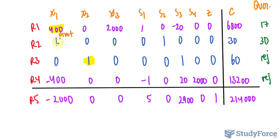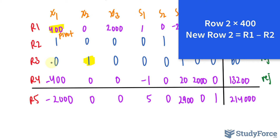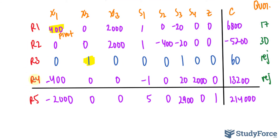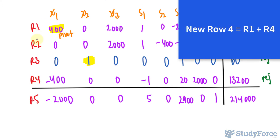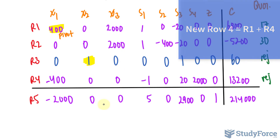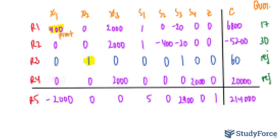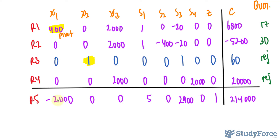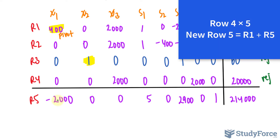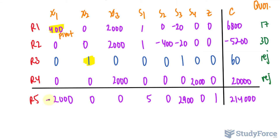Using the pivot of 400, make every number above and below it into zeros. For R2: multiply row 2 by 400, then new R2 equals R1 minus R2. For R4: add R1 and R4 together — 400 plus negative 400 equals 0, giving a new R4. For R5: multiply row 4 by 5 and take R1 plus R5 as the new R5 — 2,000 plus negative 2,000 equals 0, giving the new R5.